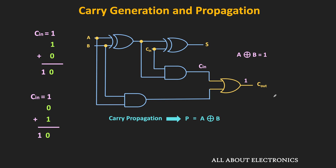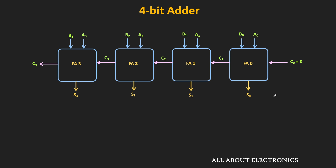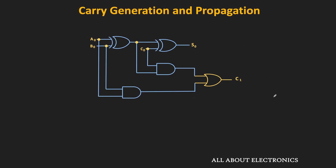Now let's consider the 4-bit ripple carry adder. For the first adder, the inputs are A0 and B0, with input carry C0. The output of the lower AND gate is G0, while the output of the XOR gate is P0. The output of the upper AND gate is P0·C0. So the carry output C1 is high whenever G0 is high or P0·C0 is high — meaning C1 = G0 + P0·C0, and the sum output S0 = P0 XOR C0.